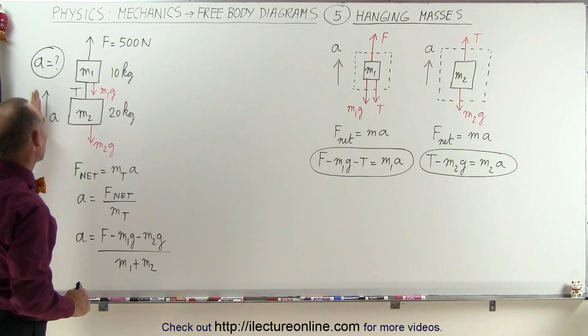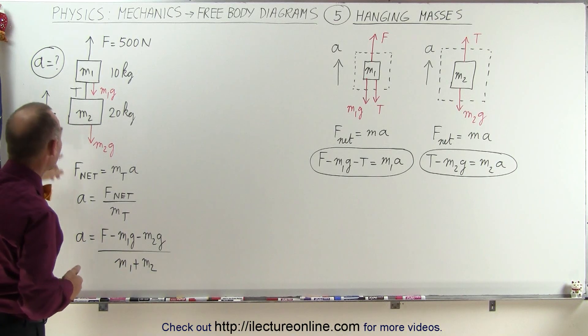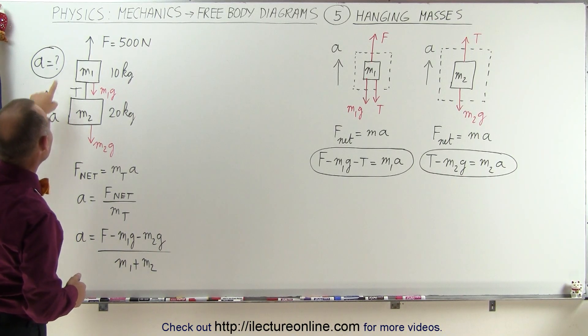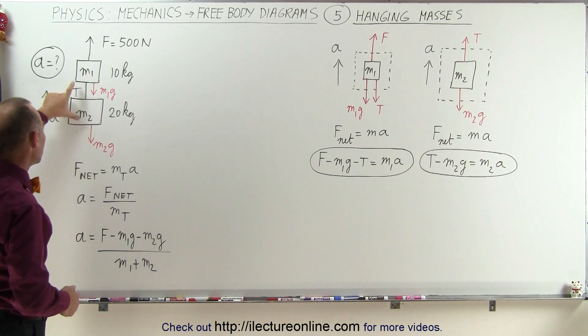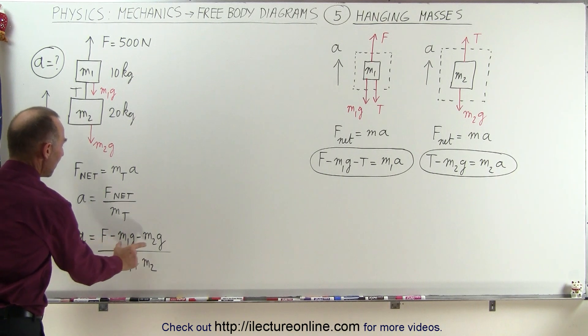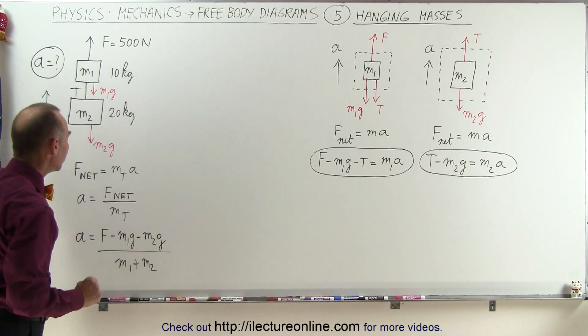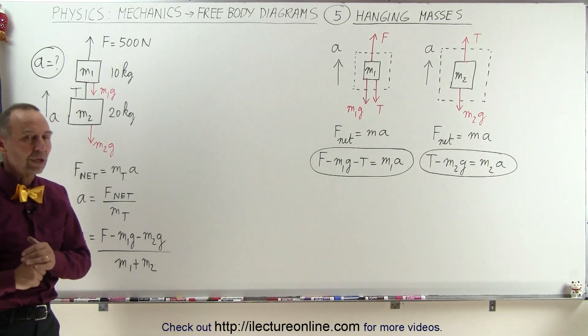If we assume that the acceleration will be upward, and of course if we're correct the acceleration will be positive, then we can say that f is the net acceleration and the two weights, the two forces of gravity on the two masses, are opposing the acceleration. So the net force is f minus m1 g minus m2 g and the total mass is m1 plus m2, and that gives you your acceleration.